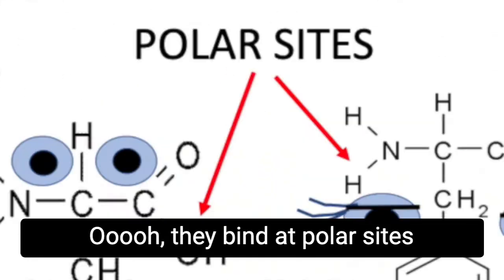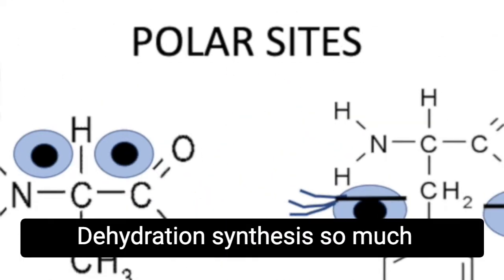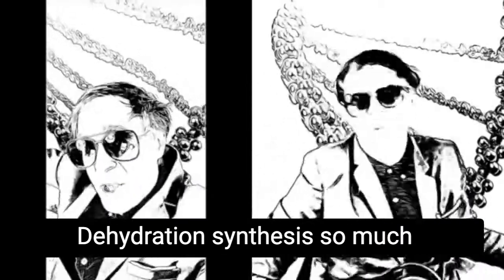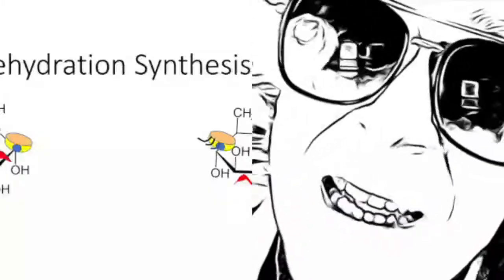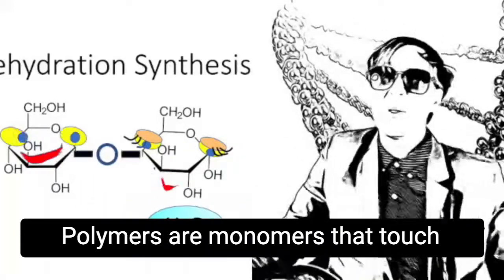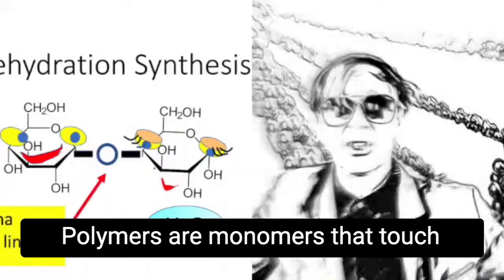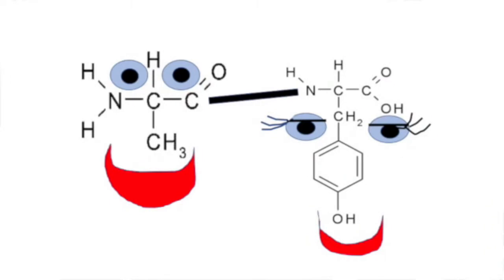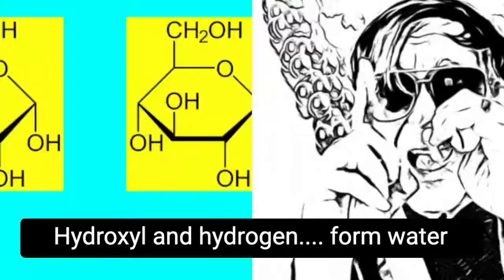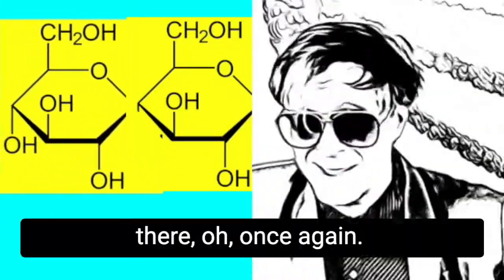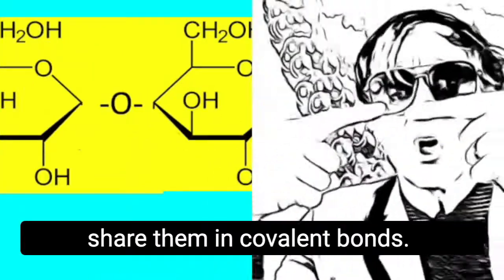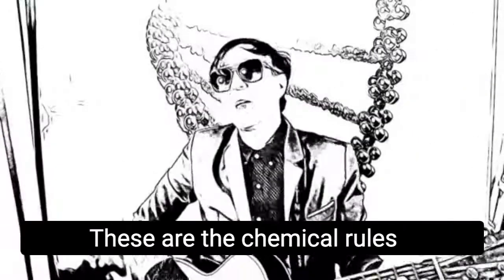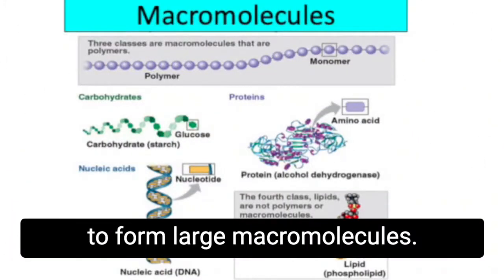They bind at polar sites. Dehydration synthesis so much. They bind at polar sites — polymers are the monomers that touch. They bind at polar sites. Hydroxyl and hydrogen form water. Remaining atoms need electrons, share them in covalent bonds. These are the chemical rules to form large macromolecules.